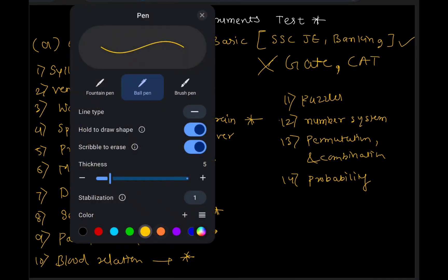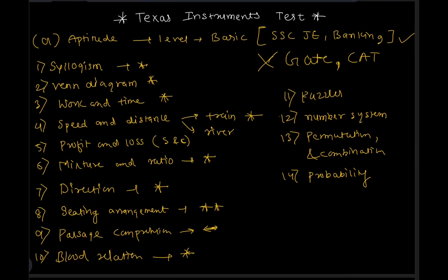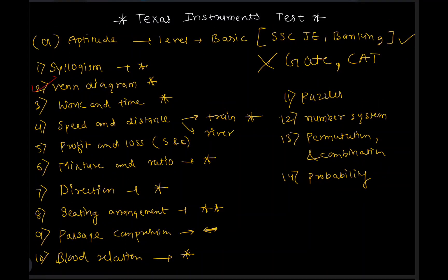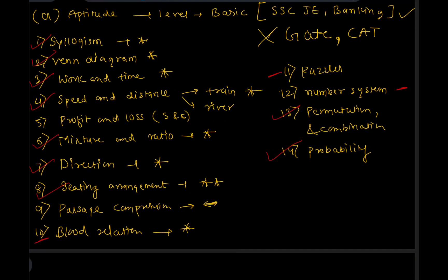To summarize the most important aptitude topics: Venn diagram and syllogism are must; Work and Time, Speed and Distance, Mixture and Ratio, Direction, and Sitting Arrangement are all must. Profit and Loss is present but less critical. Blood relation, puzzles, number system are medium priority. Permutation and Combination and Probability will have questions. Study and practice all of these.